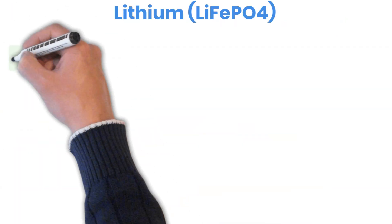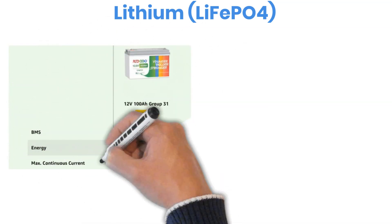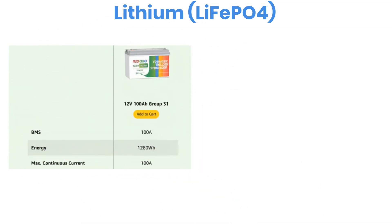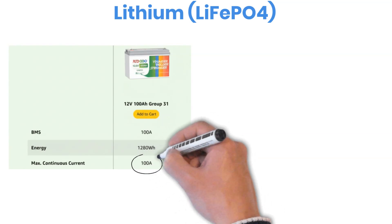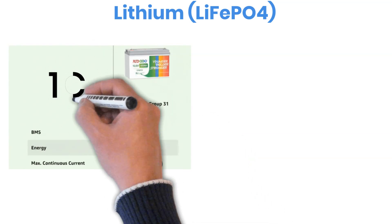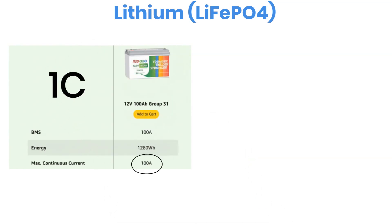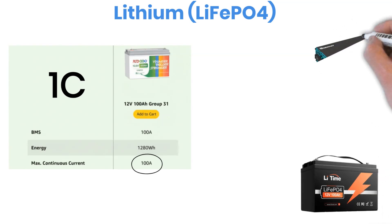First, let's talk about lithium batteries. A 100 amp hour lithium battery can normally supply 100 amps of current. That's what we call a 1C rate. Before you plan anything, always make sure your battery is actually rated to handle that much continuous current.